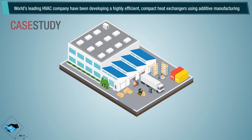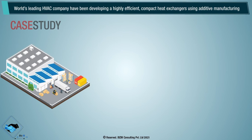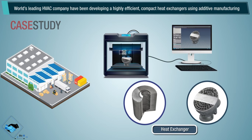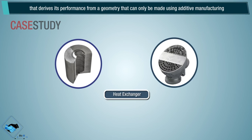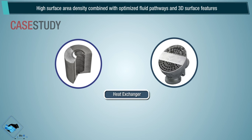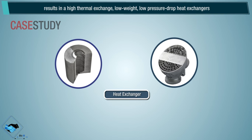A world-leading HVAC company has been developing a high-efficiency, compact heat exchanger using additive manufacturing — one that derives its performance from geometry that can only be made using additive manufacturing. High surface area density combined with optimized fluid pathways and 3D surface features results in high thermal exchange, low weight, and low pressure drop.